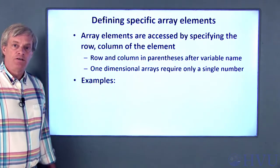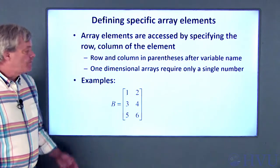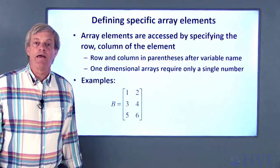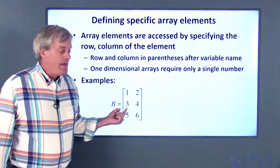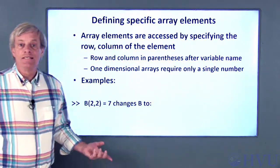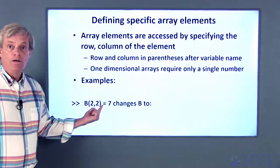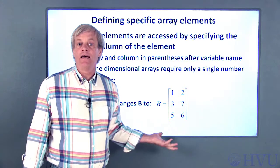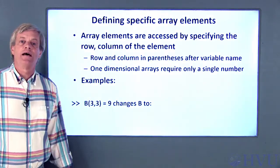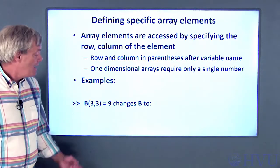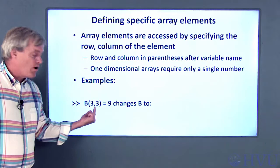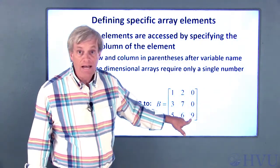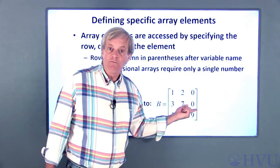I'll walk through some examples. Suppose this array already exists in the workspace and I want to assign values to specific locations. For example, let's replace the 4 with a 7 — that number is in the second row and second column. The syntax is to assign 7 to element B(2,2). None of the other elements are affected. To see what happens when we assign a value to a location that doesn't exist, I'll assign 9 to element B(3,3). B doesn't have three columns, so MATLAB creates the location, places a 9 there, and fills in unspecified elements with zeros.